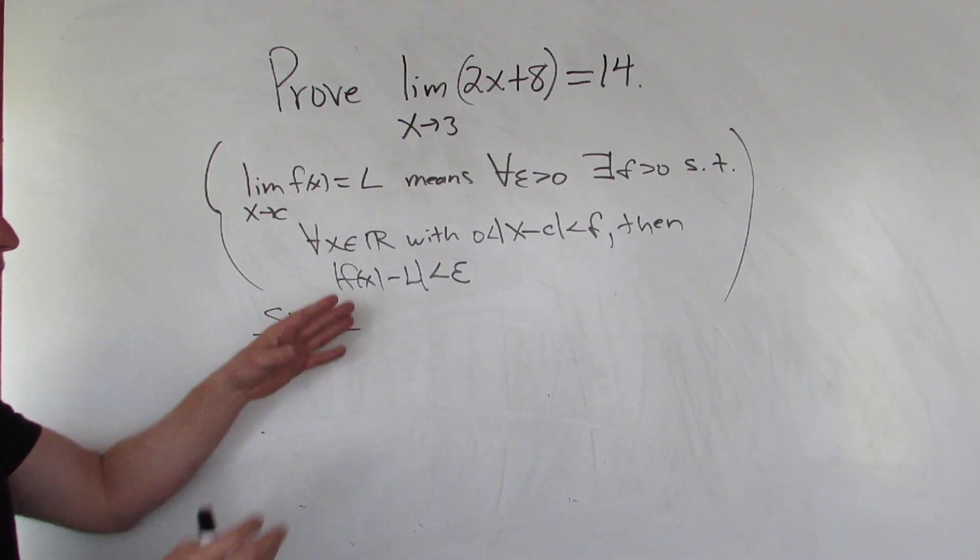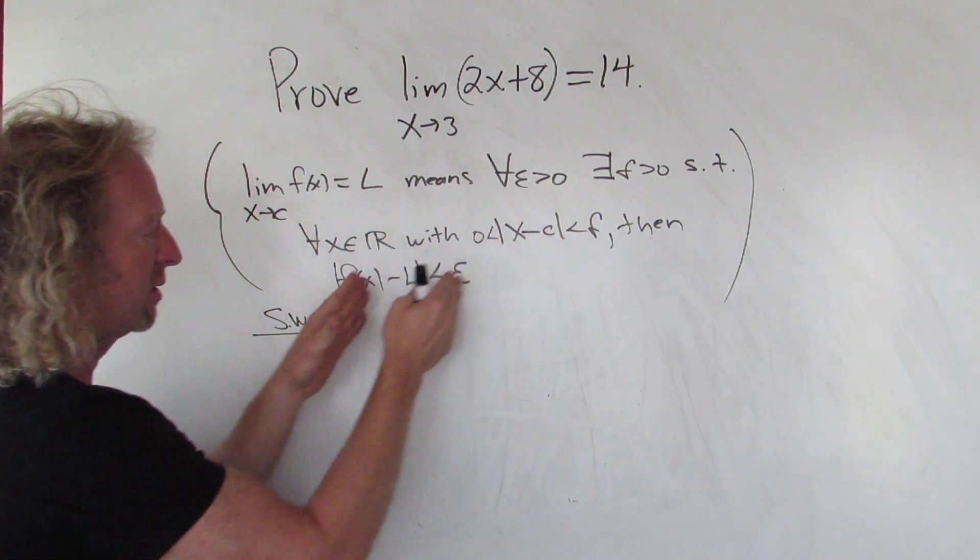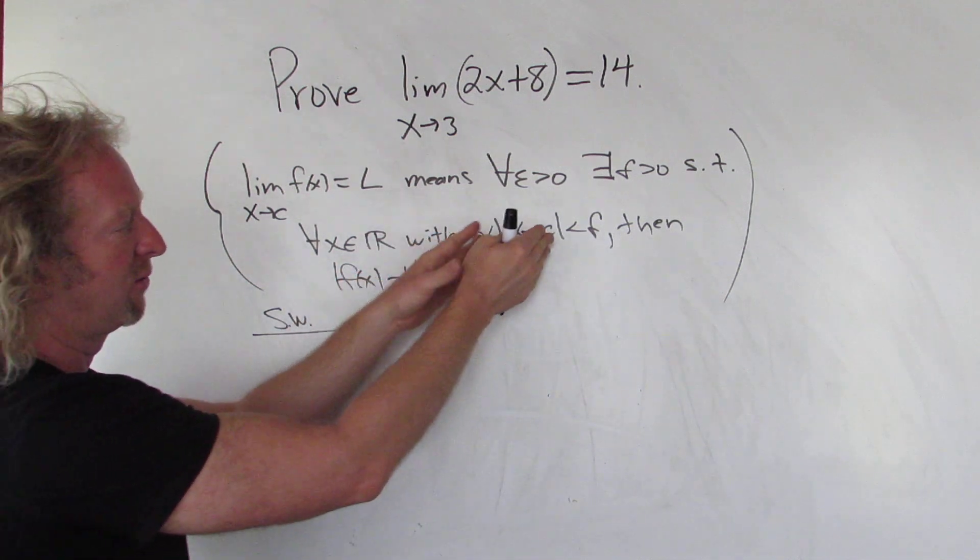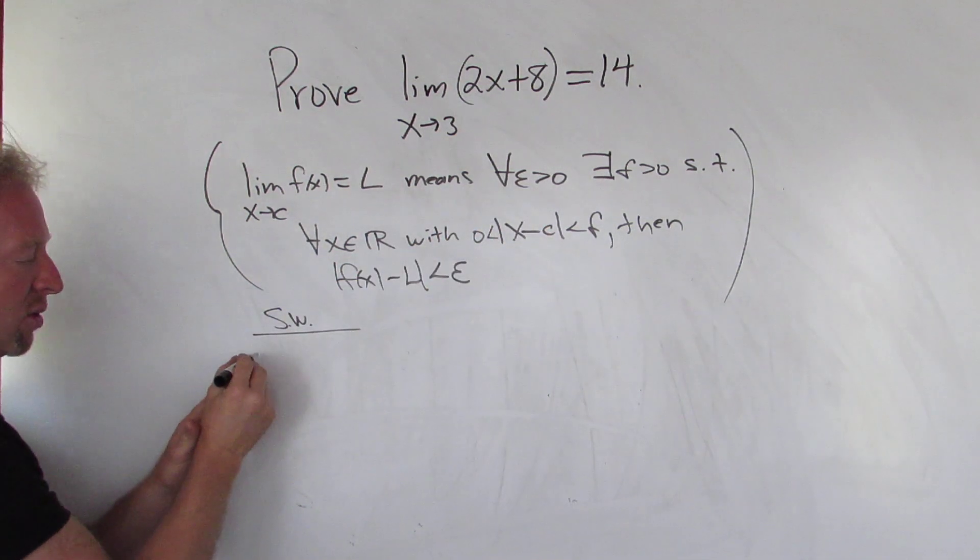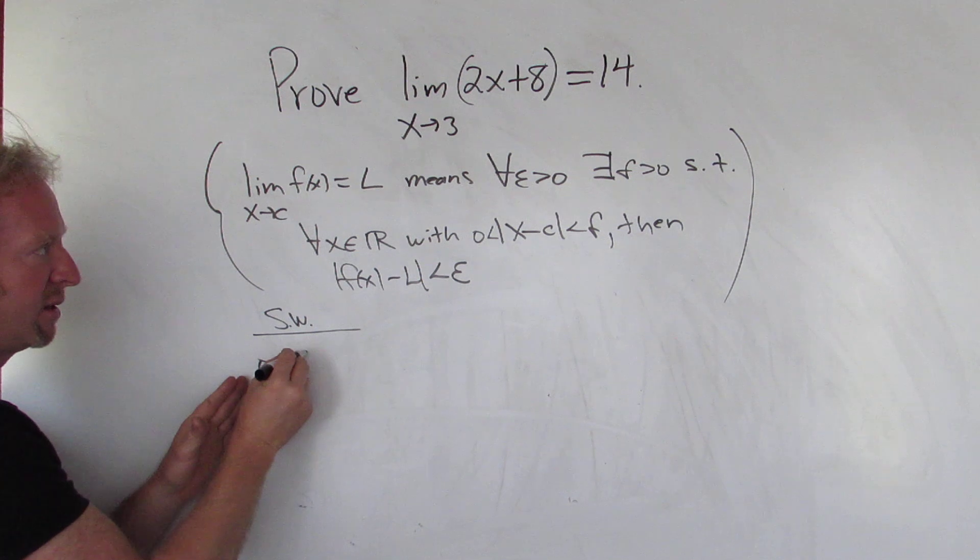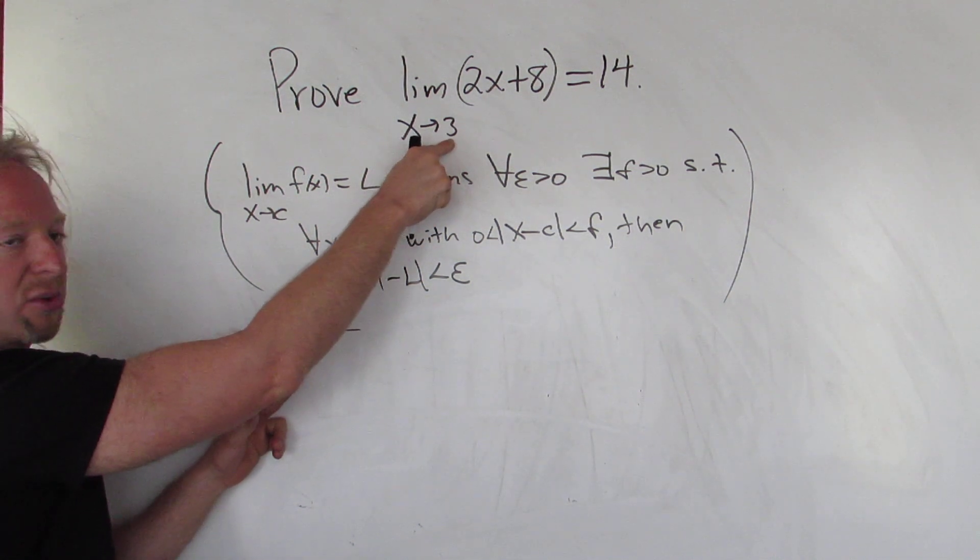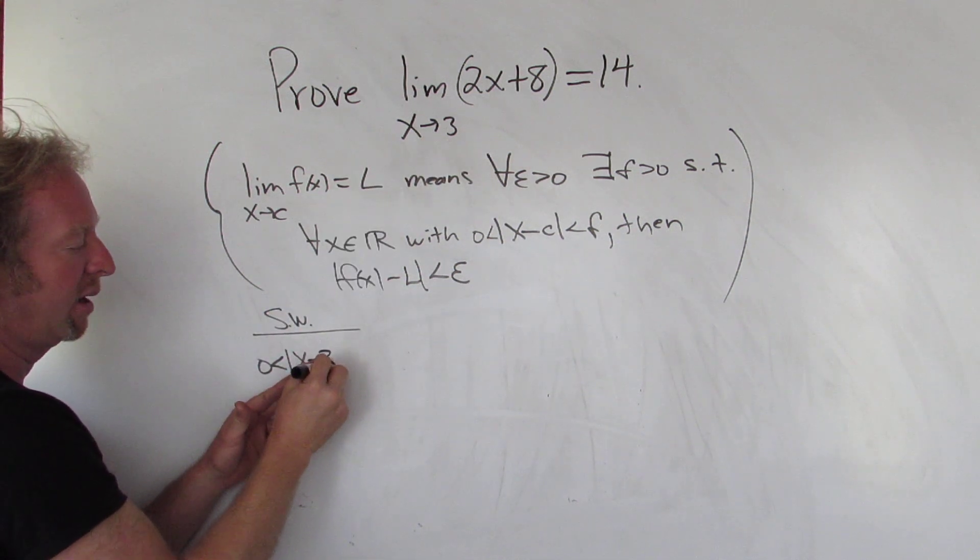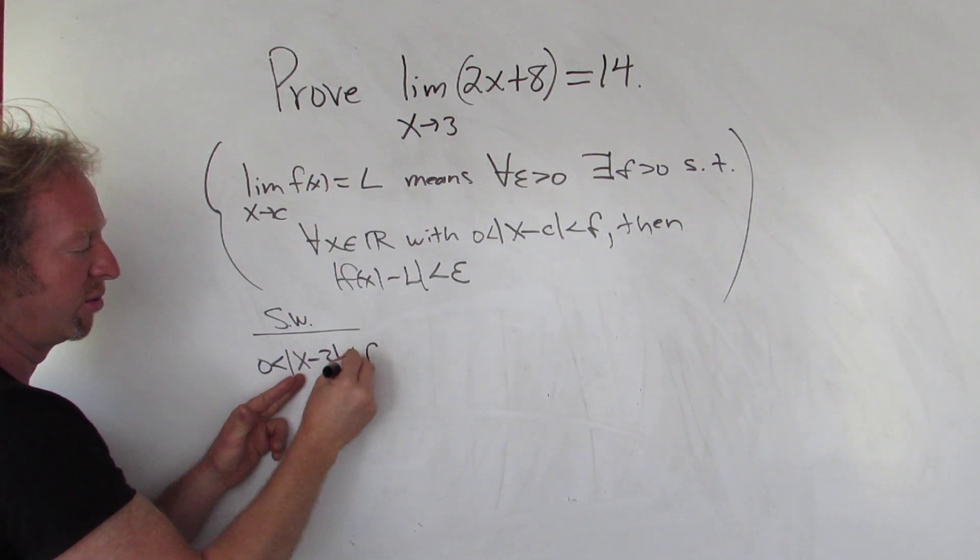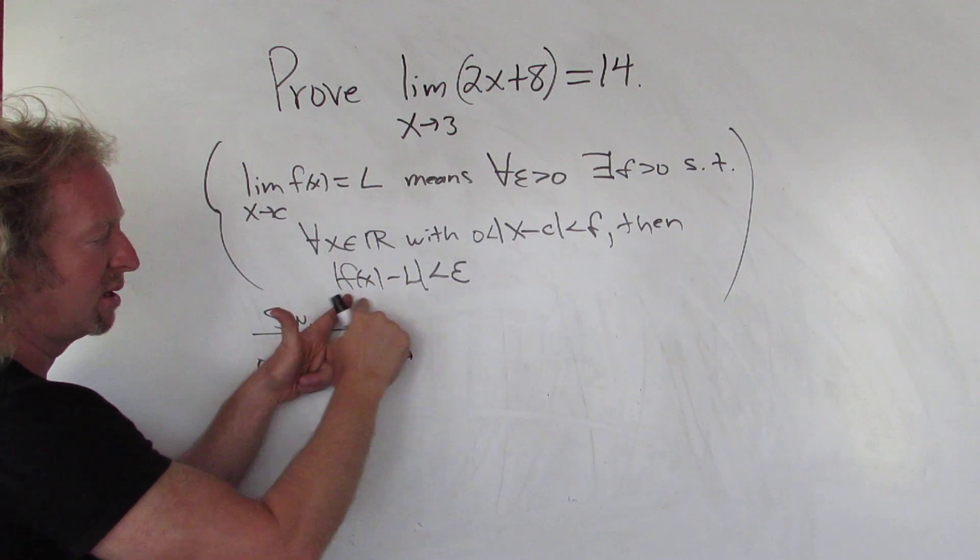So the scratch work says, if this is true, then this is true. So whenever the distance between x and c is less than delta, so what's our c here? Our c is 3, okay? So whenever this is true, then we need this to be true.